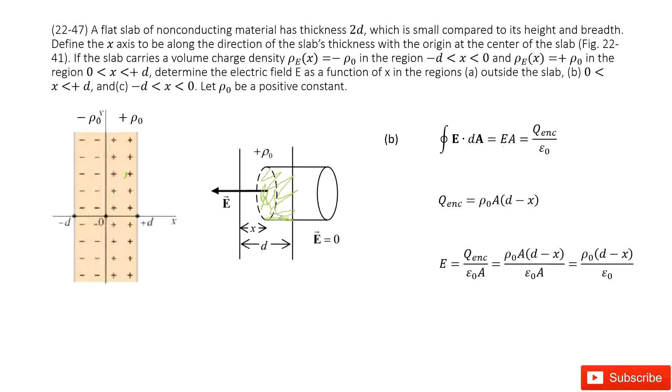The distance for this part is d minus x. So we get it there. We input the enclosed charge inside. We can see A cancels, and we get the answer there.